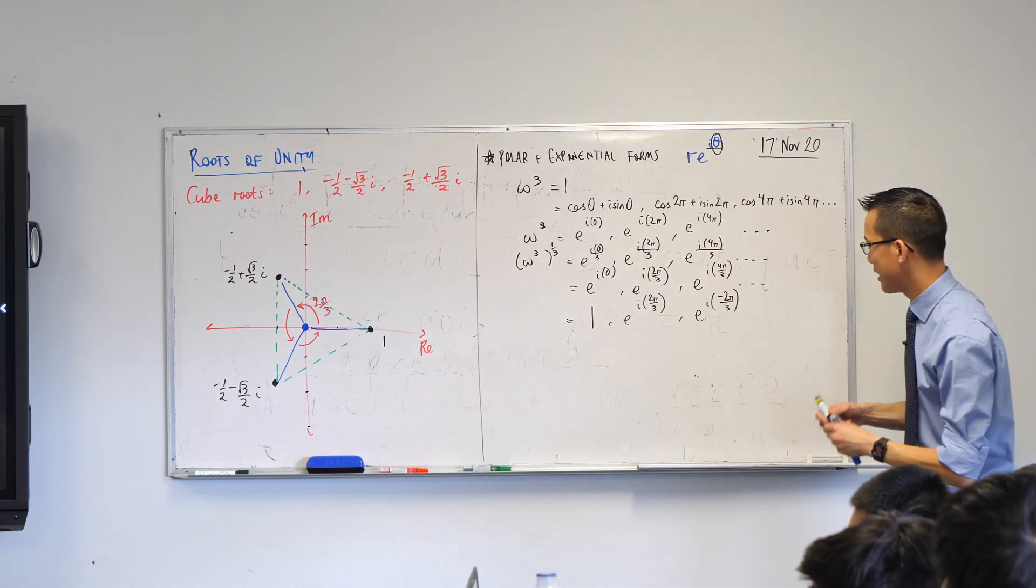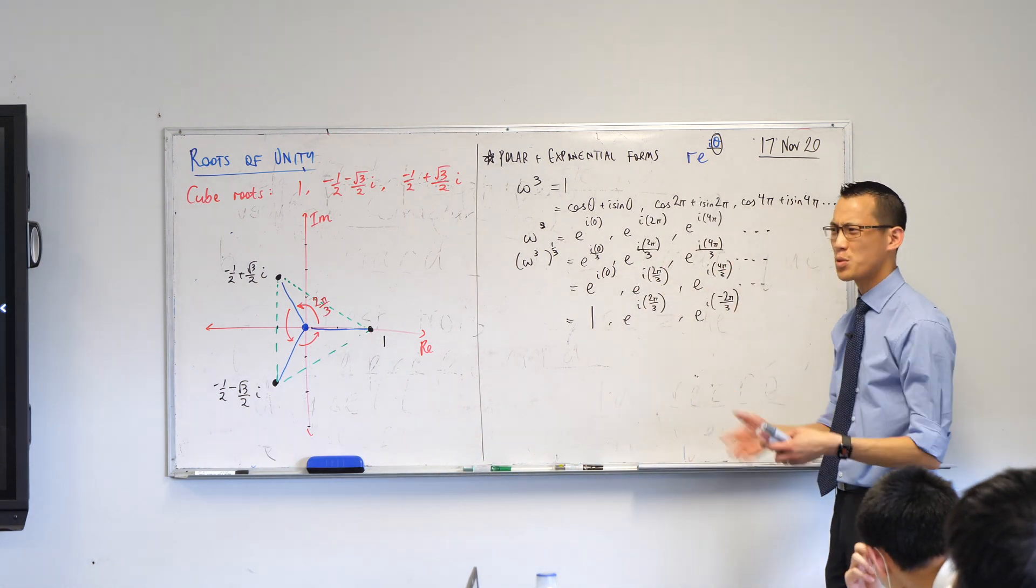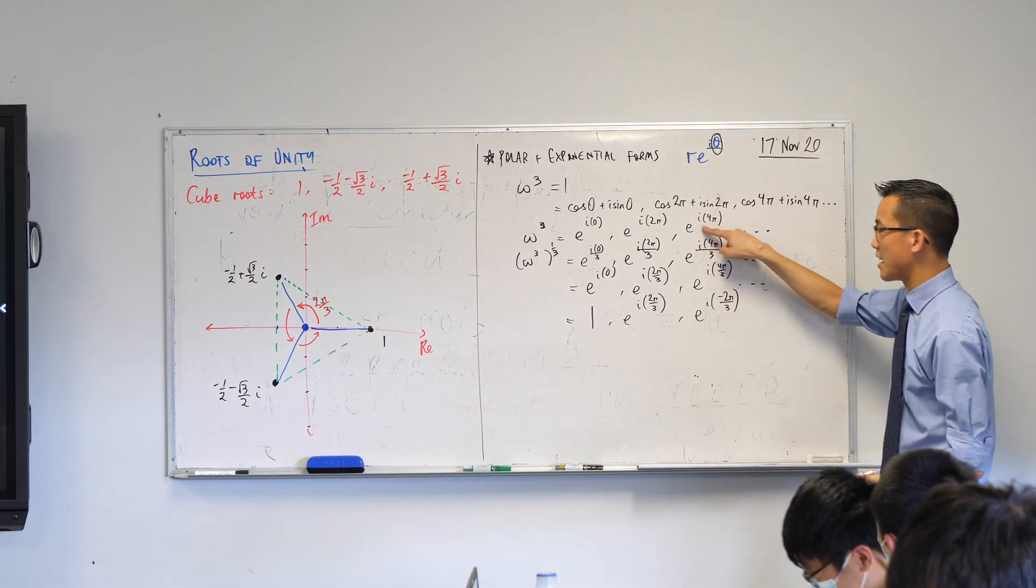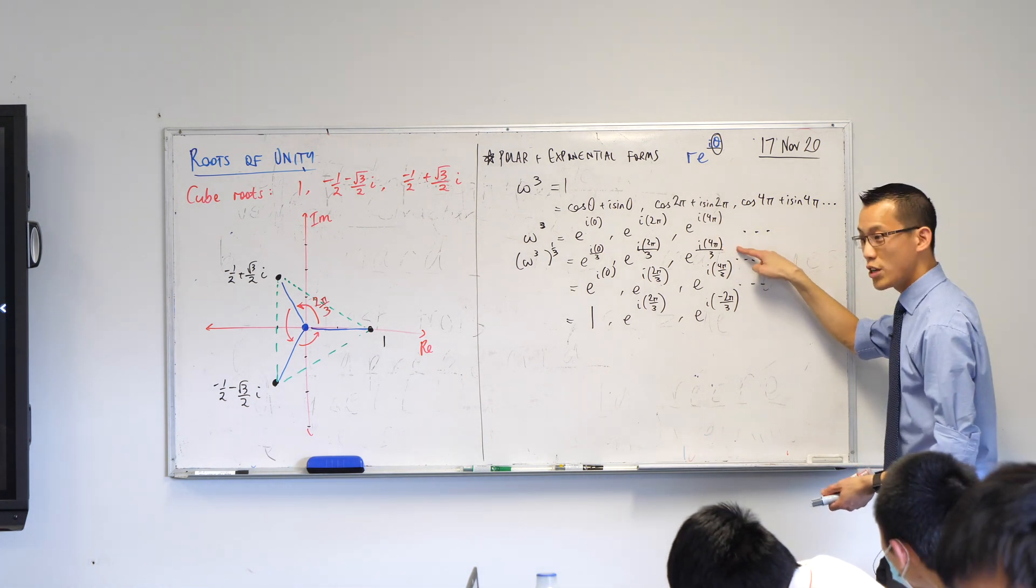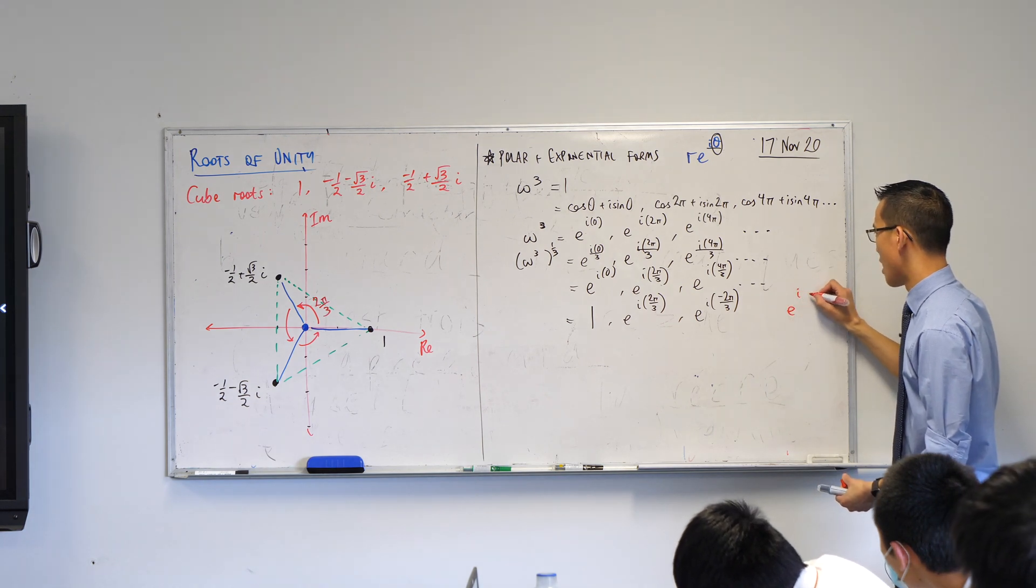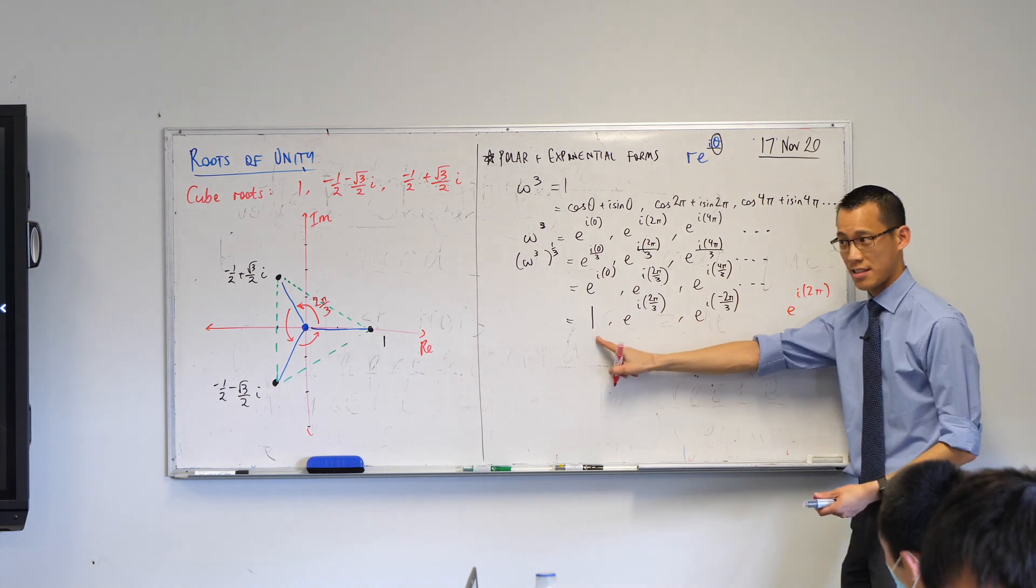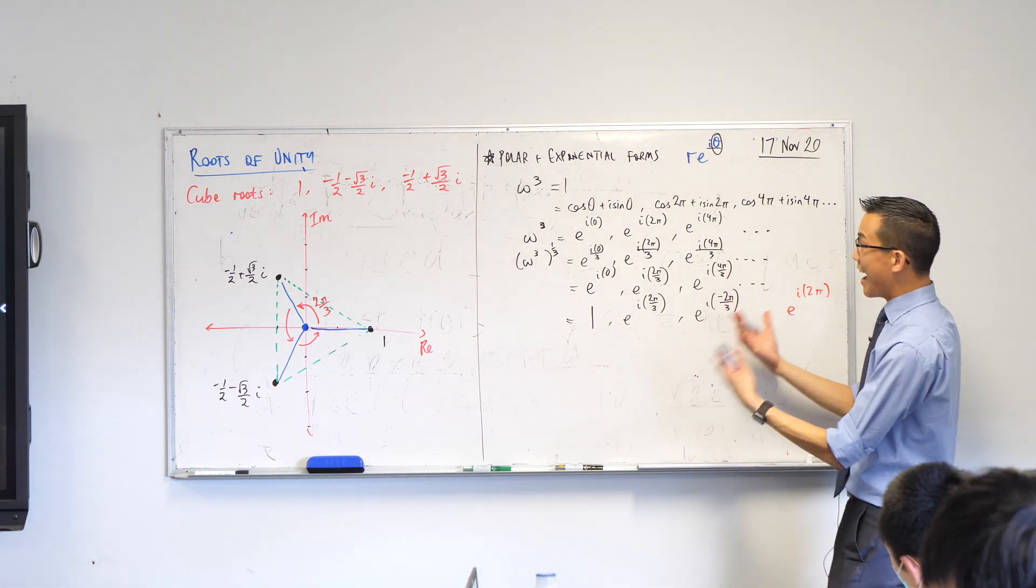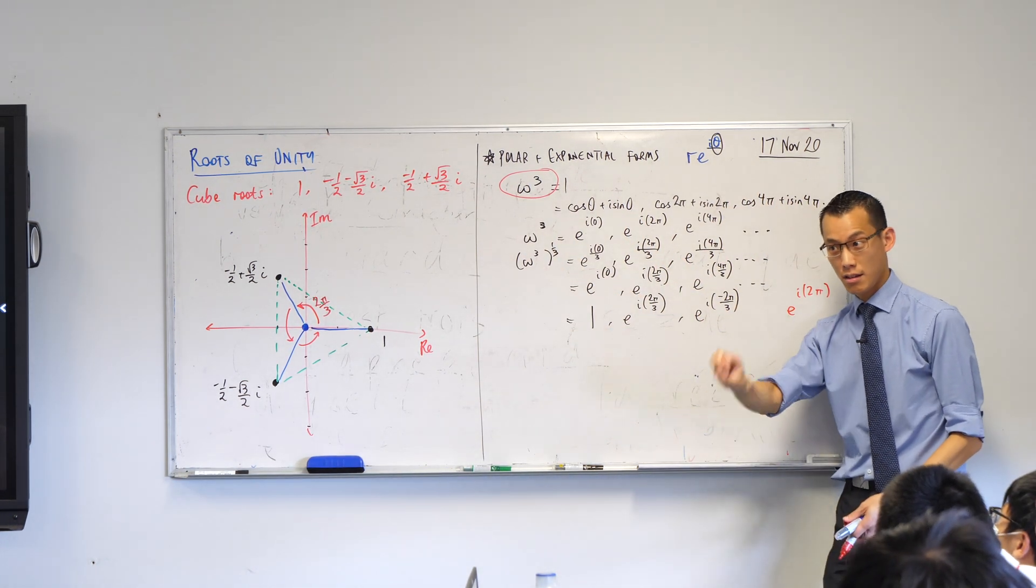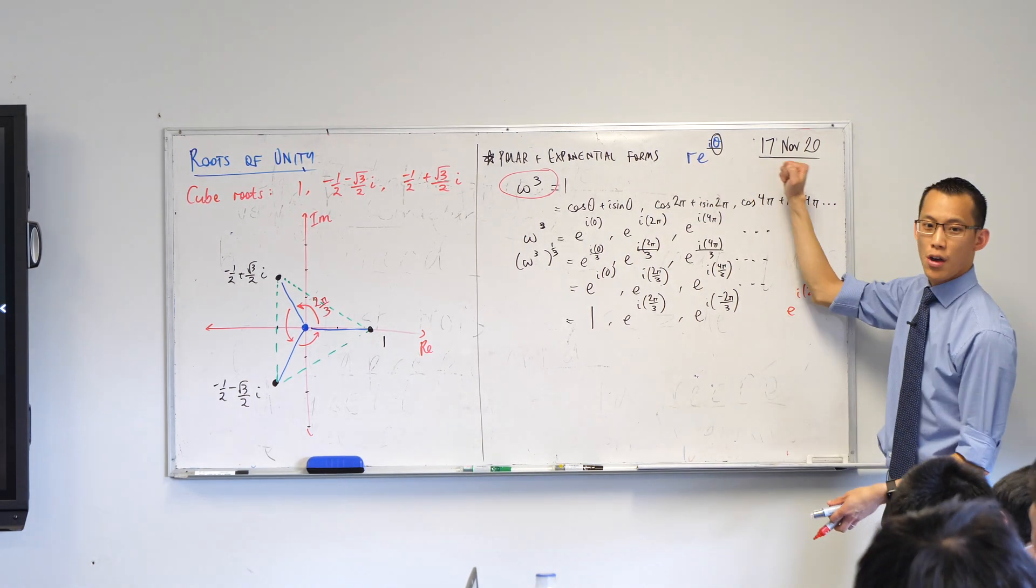Now, hopefully, it'll become clear why I didn't bother going any further than 4 pi. What would the next one be? It'd be 6 pi. So you've got e to the i 6 pi here. But then when you divide by 3, you'd get e to the i 6 pi on 3, which is 2 pi. I've already got that solution, it's been covered. I knew that because this is a polynomial up here of degree 3. So I should expect exactly 1, 2, 3 solutions.